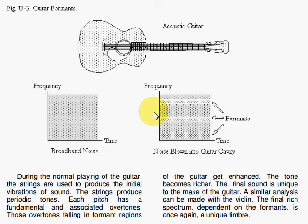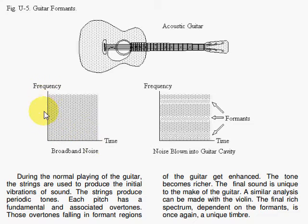We have had a request to cover formants or formant regions. First, look at a spectrogram where we have white noise. White noise is broadband noise — all the frequencies are present. The frequencies are plotted along the vertical, and this is your time.